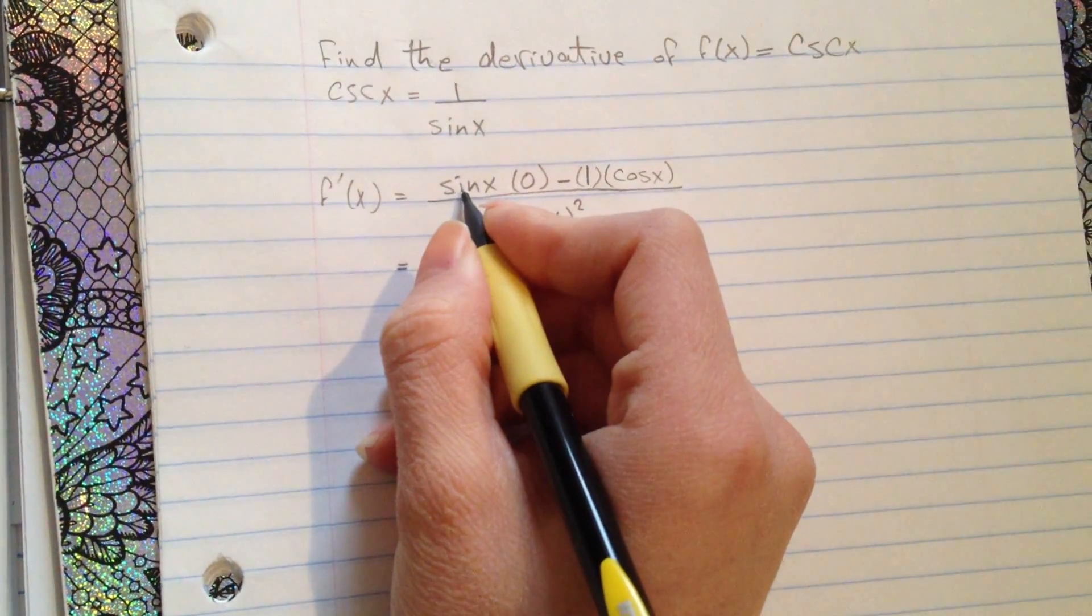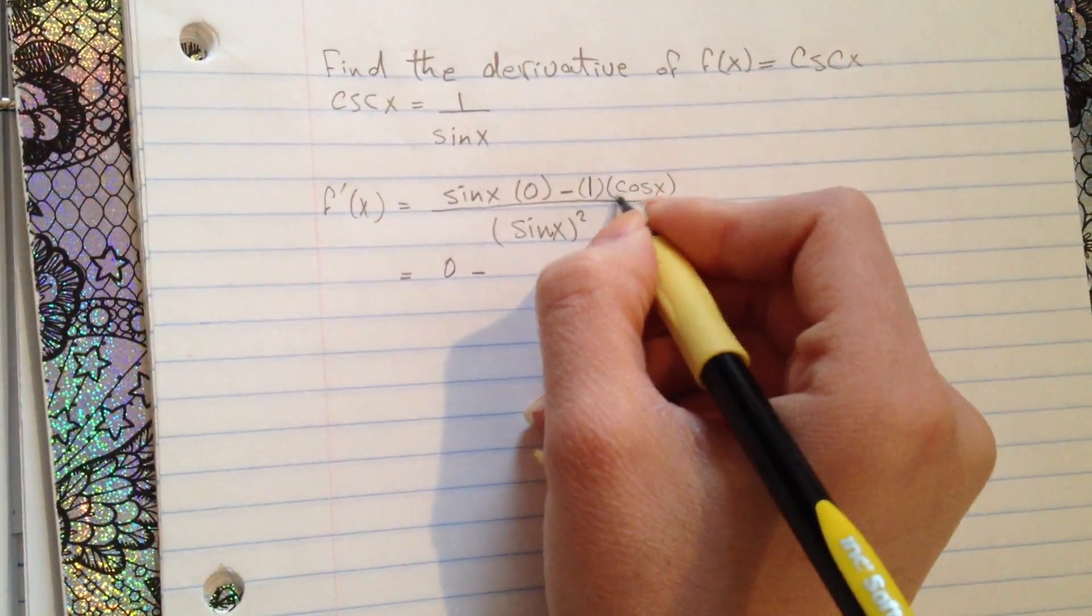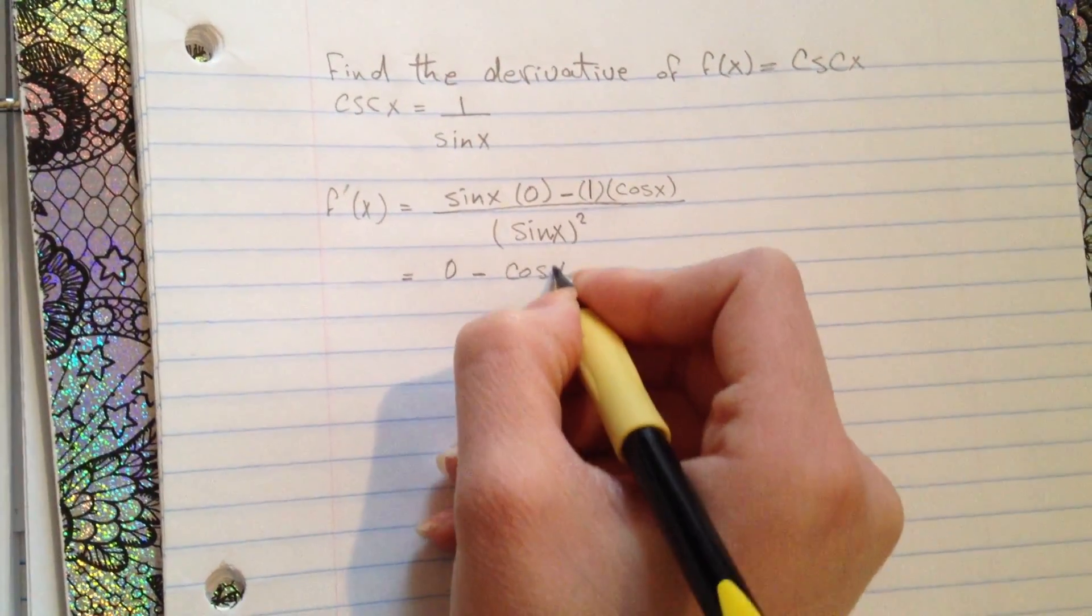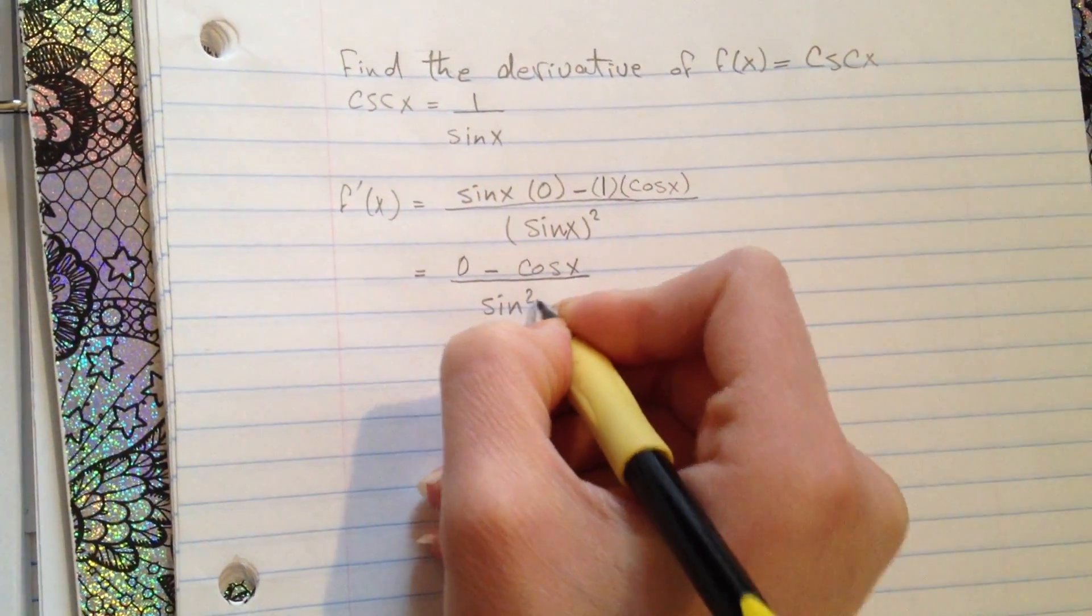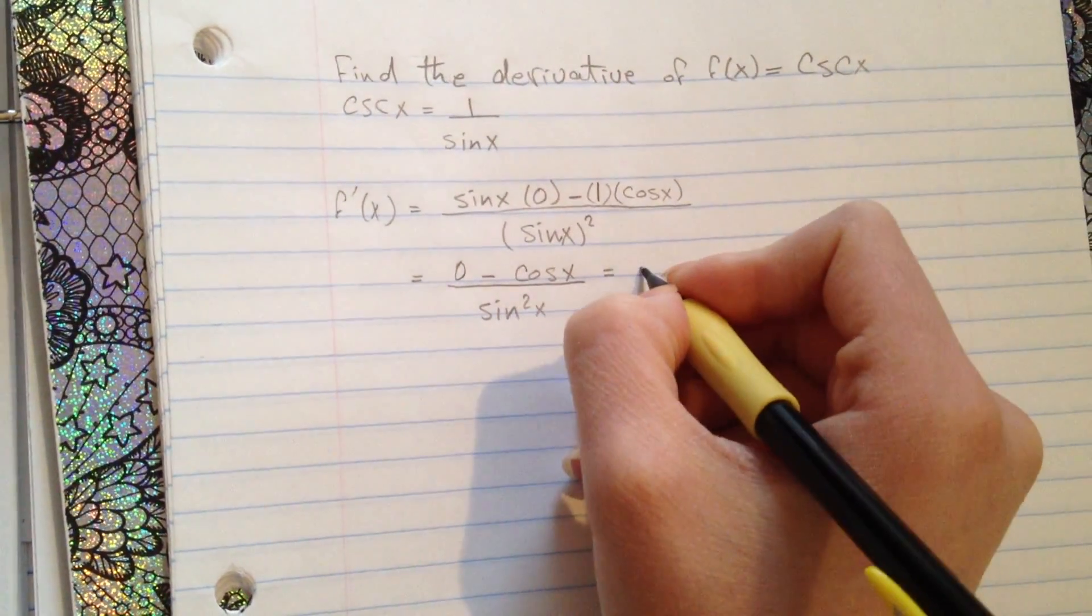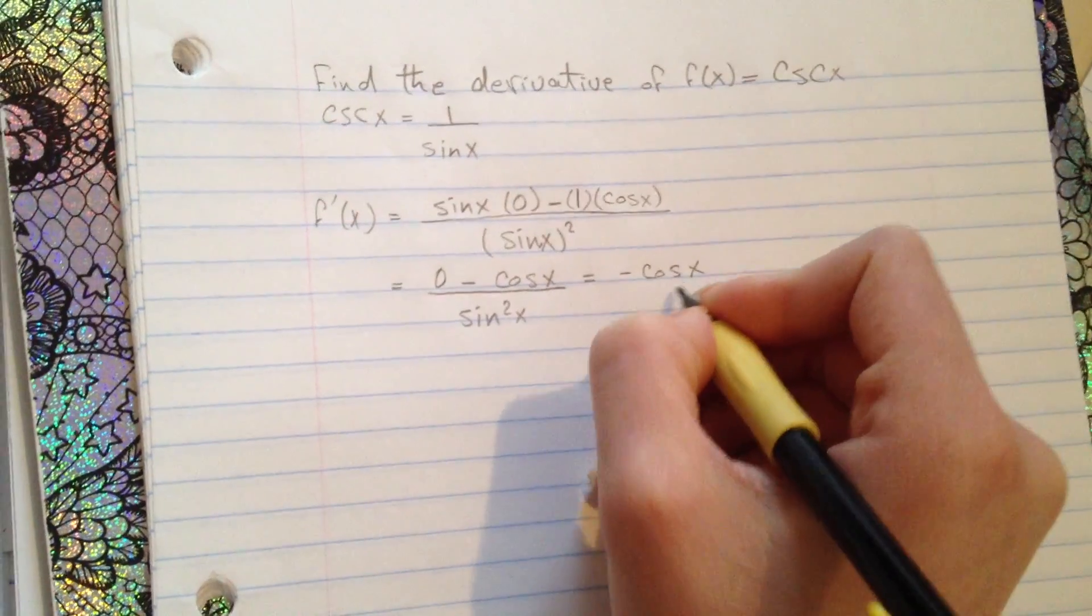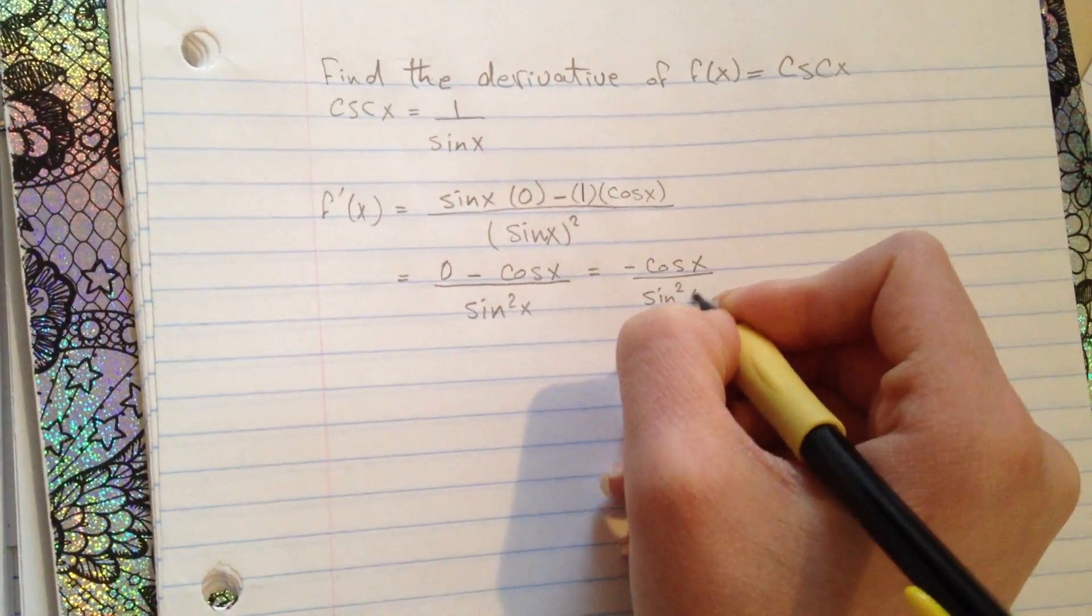Now, sin(x) times 0 is 0, minus cosine times 1 is cos(x), divided by sin²(x). So we have -cos(x)/sin²(x).